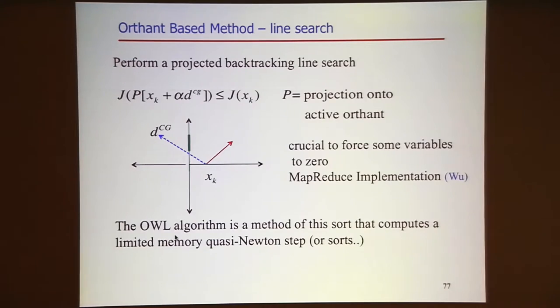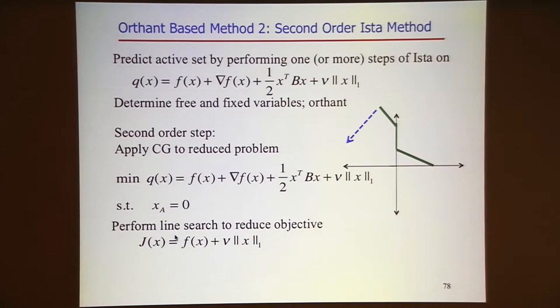Such an algorithm has been implemented—there's an implementation at Google, there's a MapReduce implementation—and it's pretty good at bringing sparsity down. But there's an orthant-based method that I like better. If I had thought about it before, we would have done this MapReduce implementation instead. I'm going to call this a second-order iterative thresholding, a second-order ISTA method.